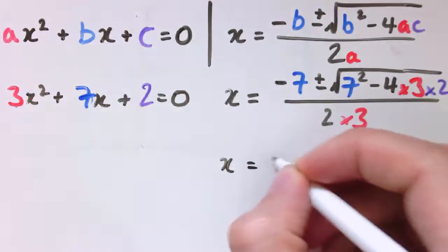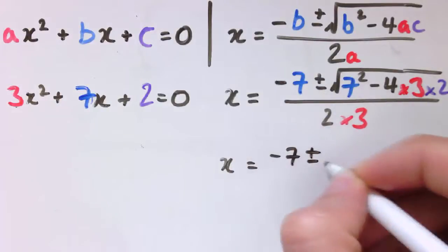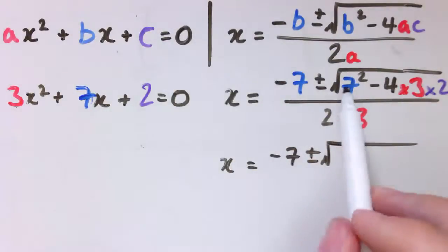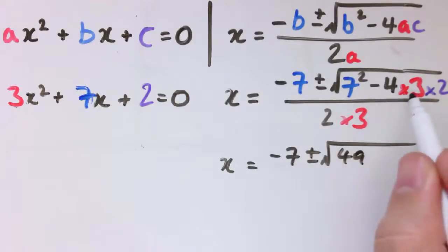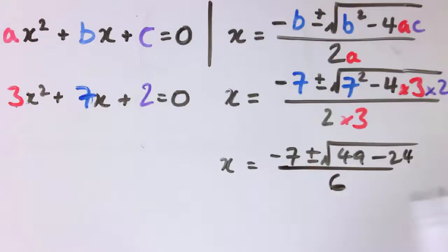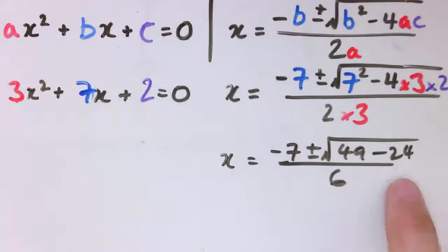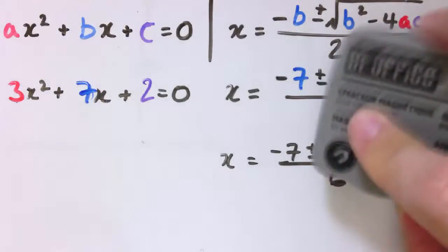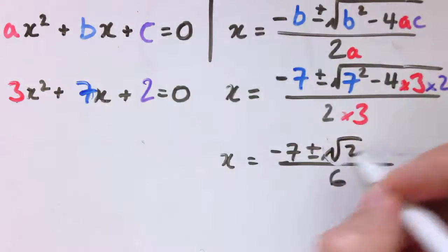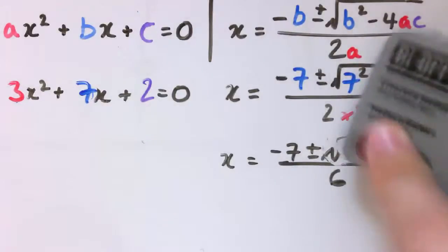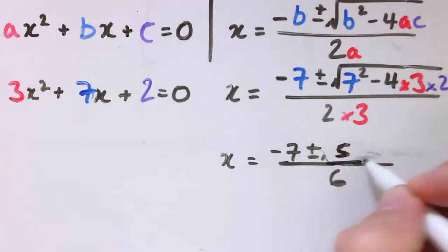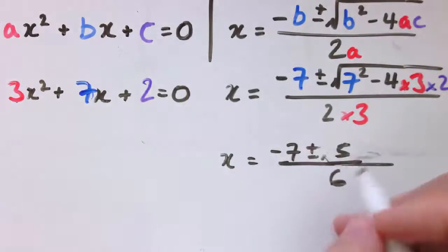So let's work out what this is. This is minus 7 plus or minus, and this is 49 minus 4 times 3 times 2 is 24, all divided by 6. 49 minus 24, that is 25, and the square root of 25 is just 5. So let's replace all of that just with 5. Now this plus or minus thing, we need to know what it means.